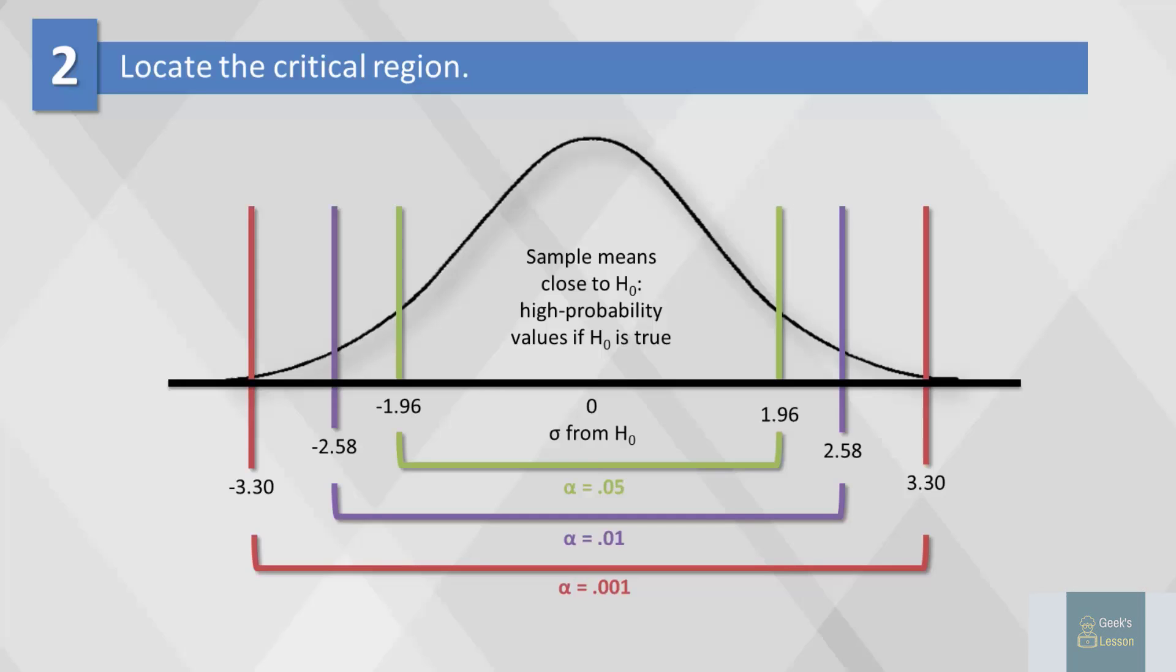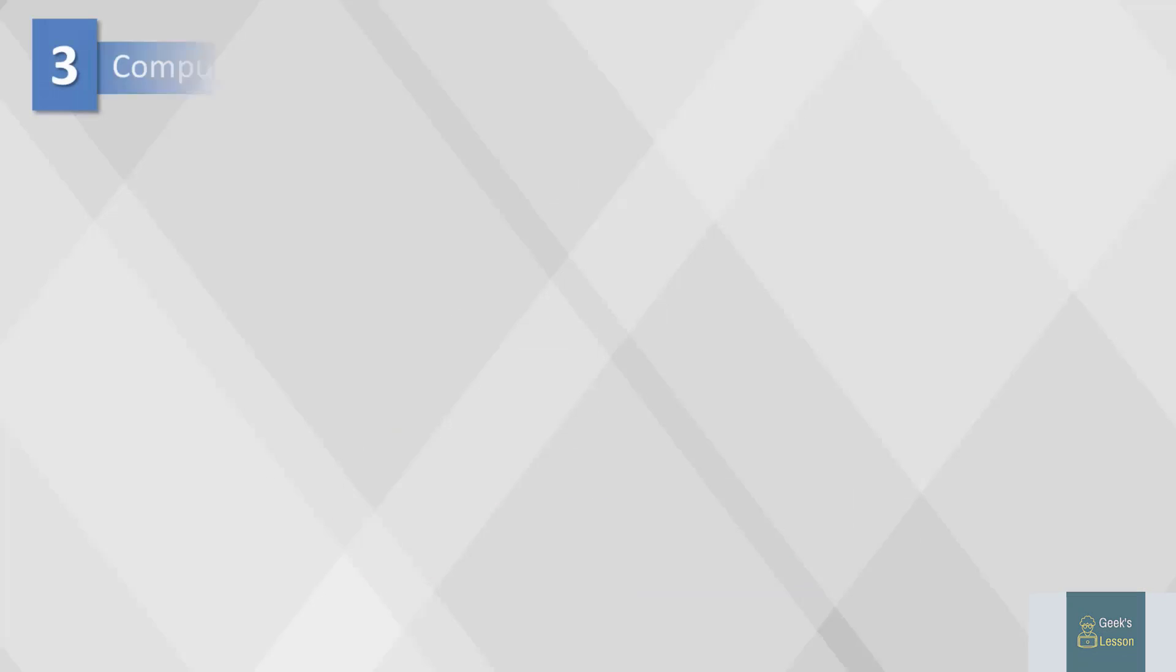For example, if alpha is .05, our result is significant if it's less than .05. Once we decide whether we want to measure accuracy at the 10%, 5%, or 1% level, we can compute the test statistic.